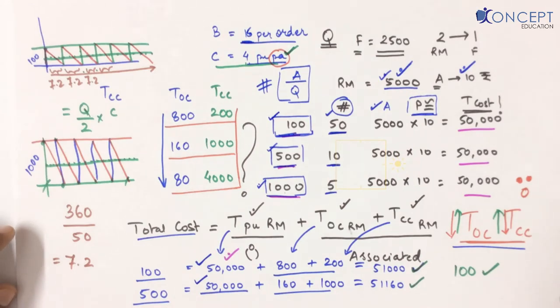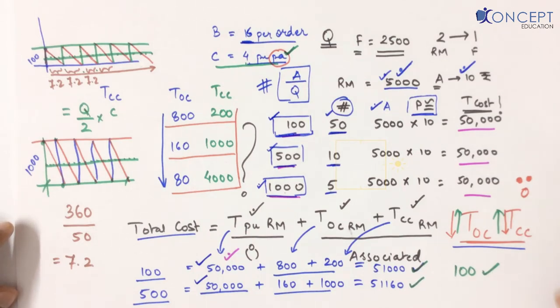But is 100 units the most optimal quantity? Is there some other quantity besides 100 that could give us even more benefit? How do I find that?